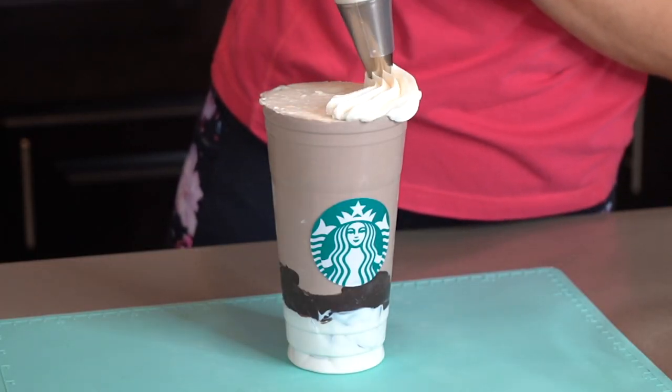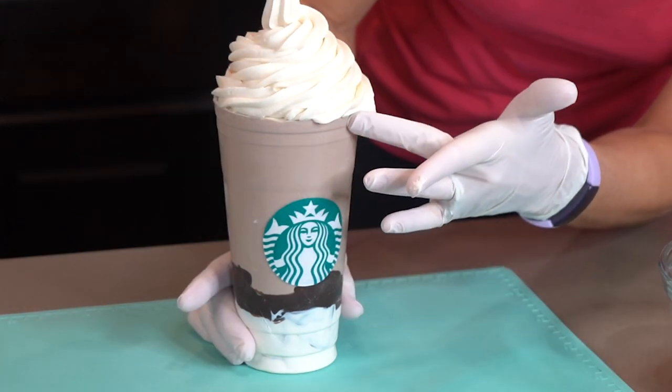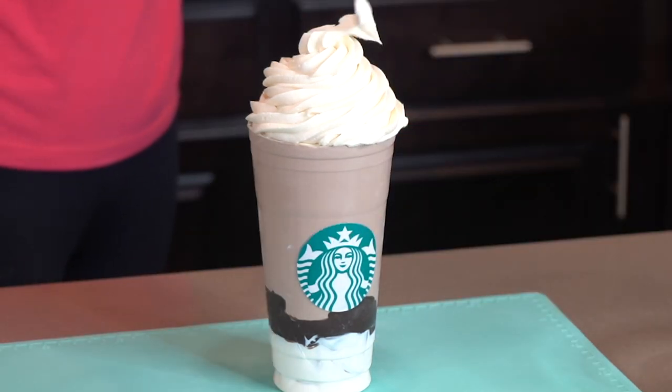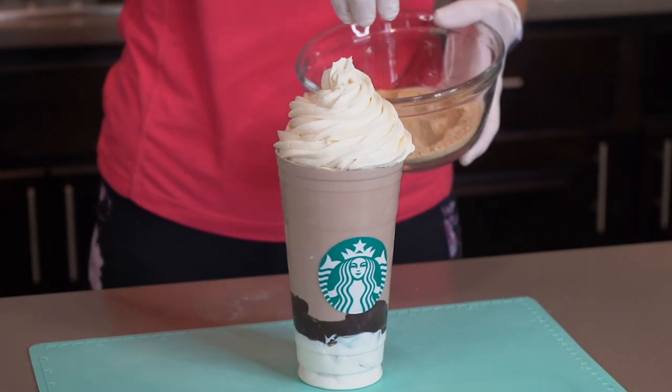And finally, I am piping the buttercream swirl on the top. Once I had it piped, I then cleaned it up just a tad around the sides, and also on the top to make it more realistic. And then I am topping it off with more crushed graham crackers.